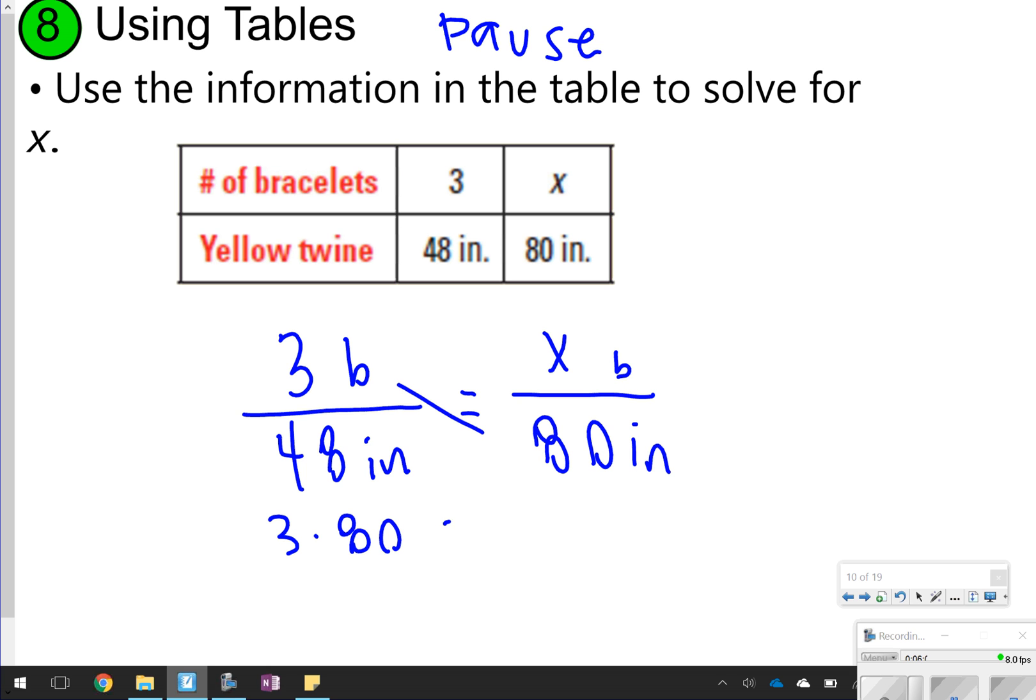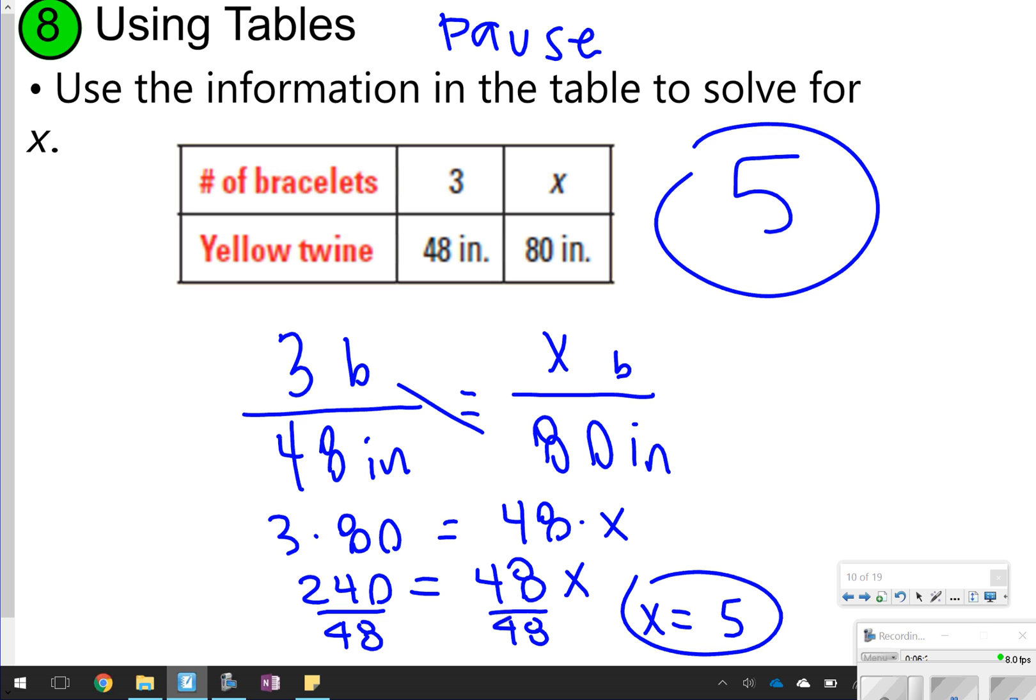3 times 80 and 48 times x, that's 240, is equal to 48x. And then we're just going to essentially divide 240 and 48, so x is equal to 5. So you can have 5 bracelets with 80 inches of yarn, or twine.